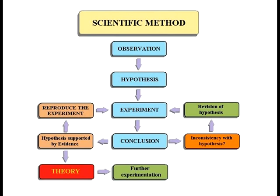A lot of times people miss observation as an actual step of the scientific method, but let me give you some background on why it's so important. Until scientists were able to create microscopes and see the very small, we couldn't come up with cell theory. We didn't understand that living things were made of cells — we couldn't see that small. Until we had the technology to start observing the very small, we didn't understand some of the fundamentals of life.